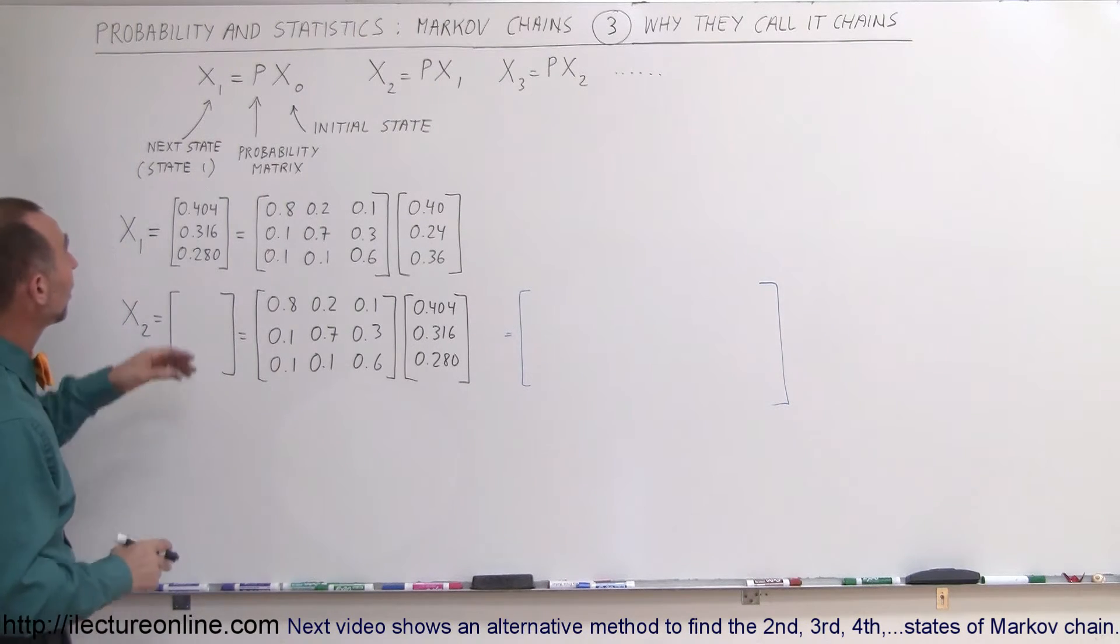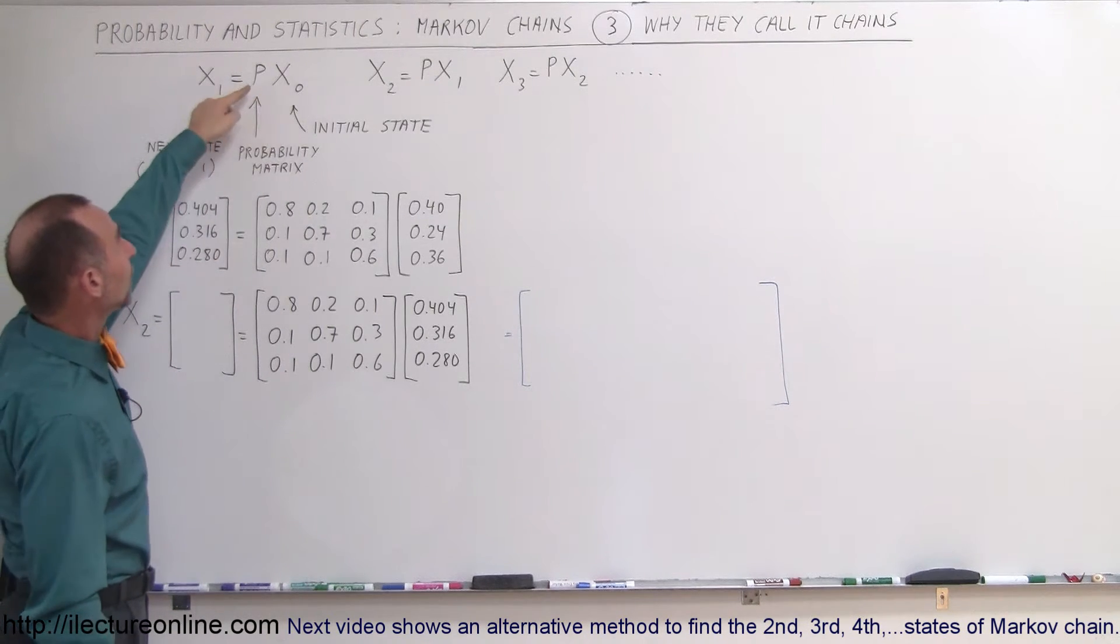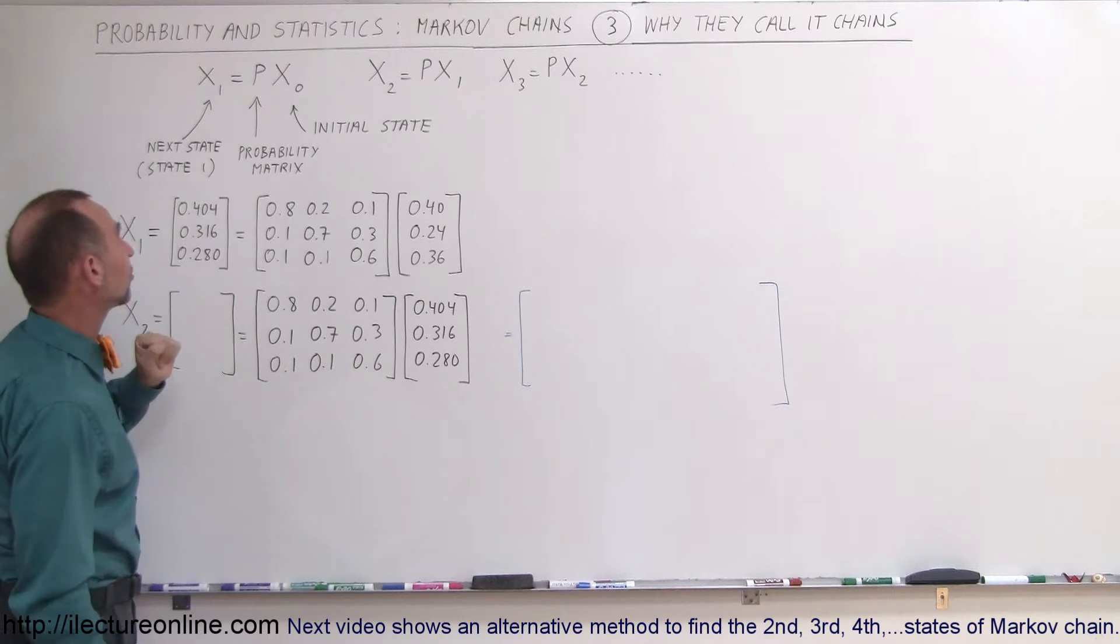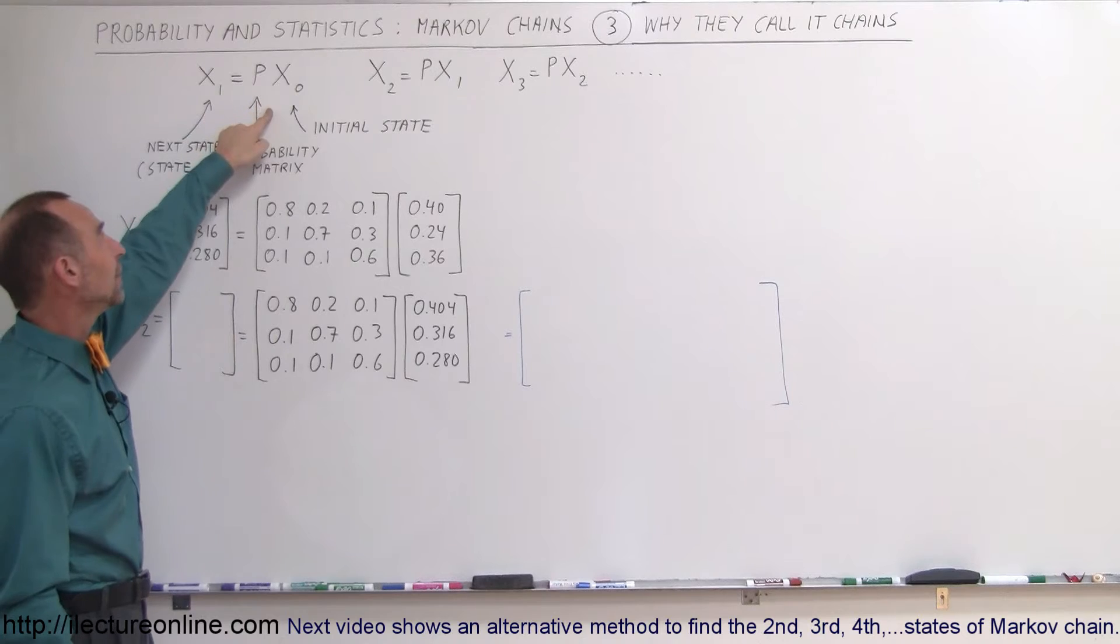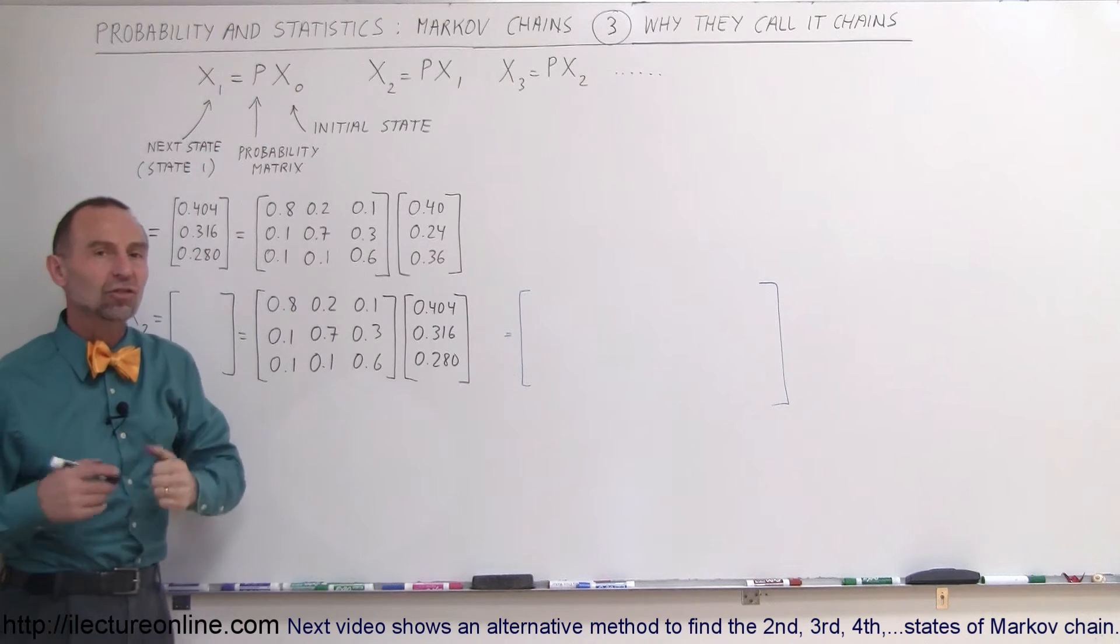So the way that works is we have the initial state, the probability matrix, and the next state. We're going to calculate state one, which is based upon the probability matrix multiplied by the initial state.